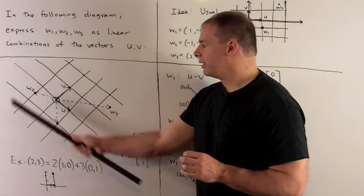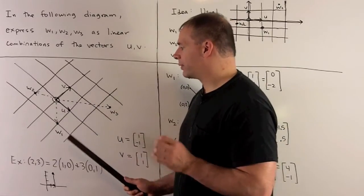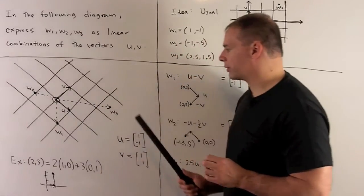Now, we have the plane R2, we have our vectors u and v coming off the origin, then we have three other vectors, w1, w2, and w3.